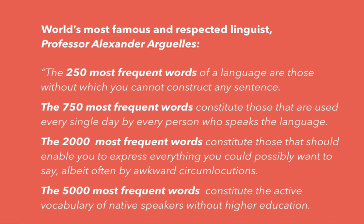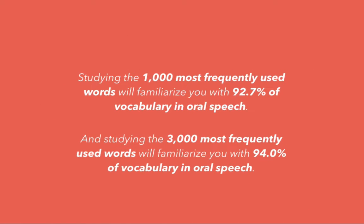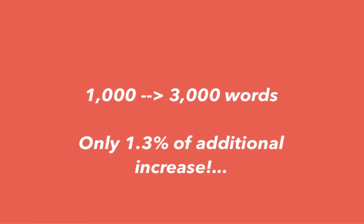A fascinating study was done by Alexander Arguelles, who is the world's most famous and respected linguist. What he discovered was that studying the most frequently used words — specifically the first 1,000 most frequently used words — will familiarize you with 92.7% of vocabulary in oral speech. When he measured people who studied the 3,000 most frequently used words, it accounted for 94% of oral vocabulary. That means going from 1,000 to 3,000 words — tripling the initial barrier — 2,000 more words only resulted in a 1.3% additional increase.